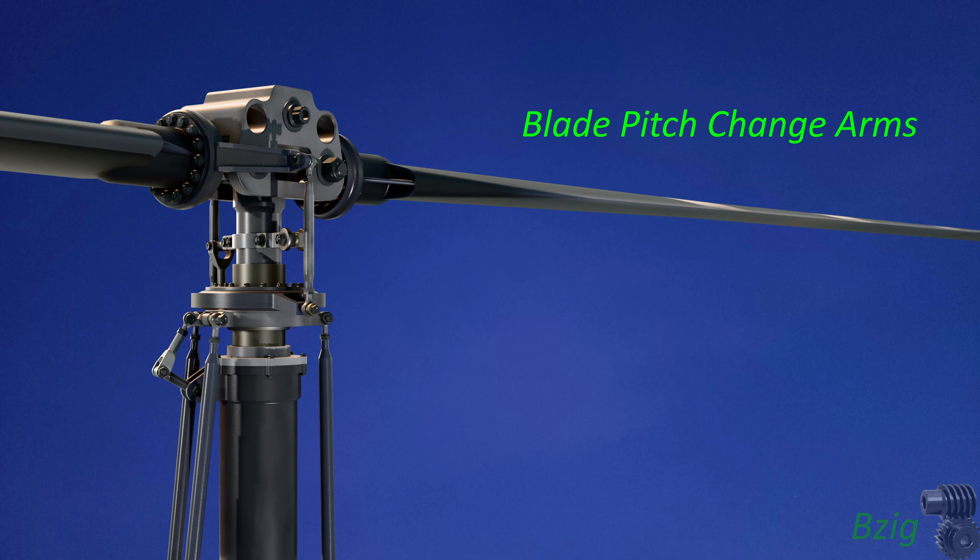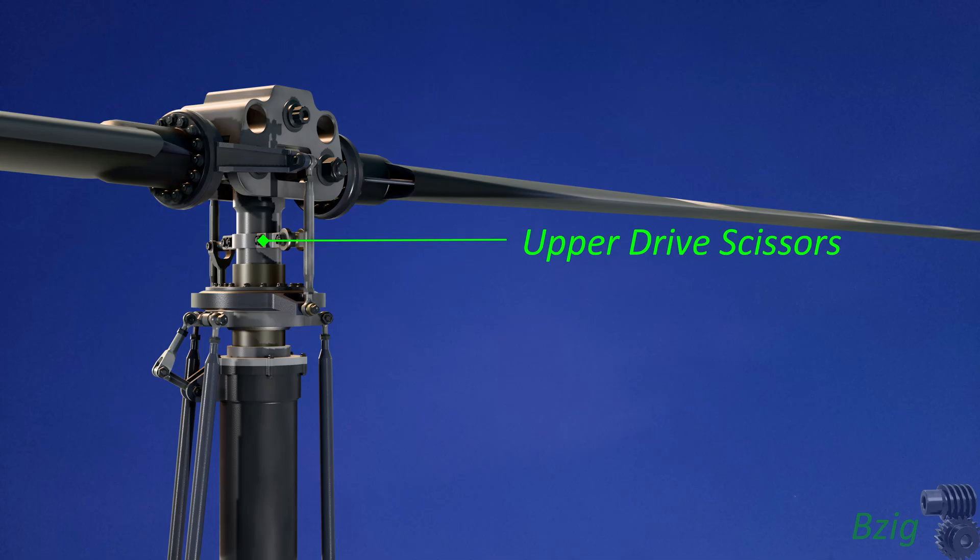The main rotor controls consist of blade pitch change arms, blade pitch change links, the upper drive scissors, the rotating swash plate,